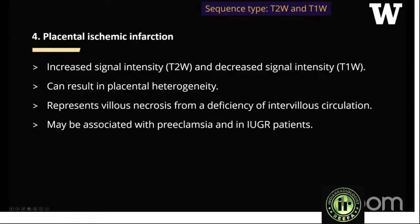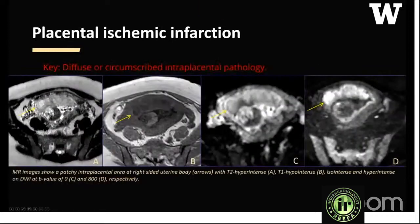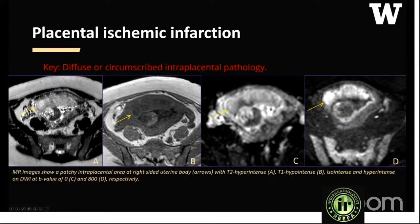Placental ischemic infarction appears on T2-weighted and T1-weighted sequences as increased signal intensity on T2 and decreased signal intensity on T1. It can result in placental heterogeneity and is seen in patients with preeclampsia or IUGR. This example shows an intraplacental infarct: bright on T2, low signal intensity on T1. Diffusion is also helpful — restriction can be seen on DWI. The T1 bright, T2 low signal pattern helps differentiate infarction from other features.